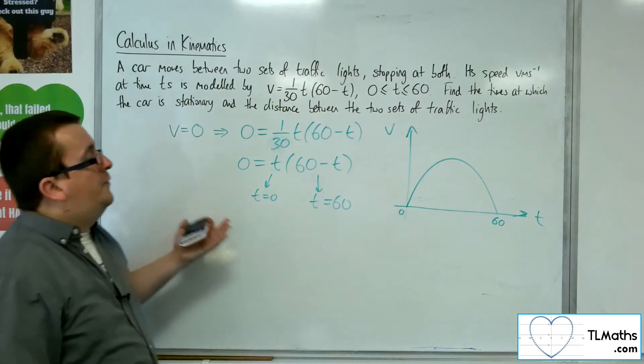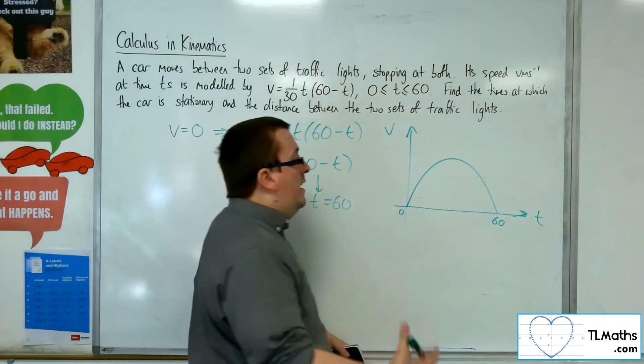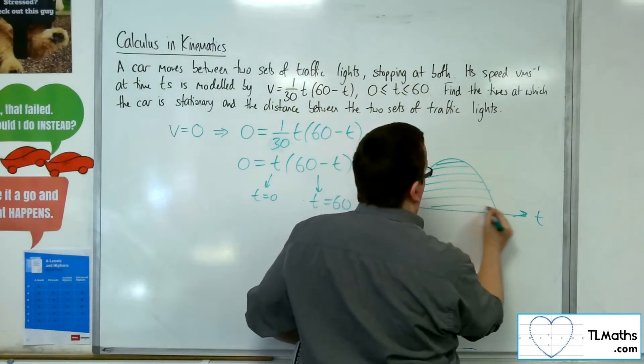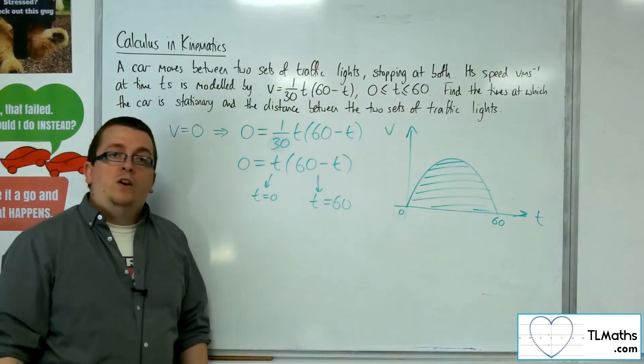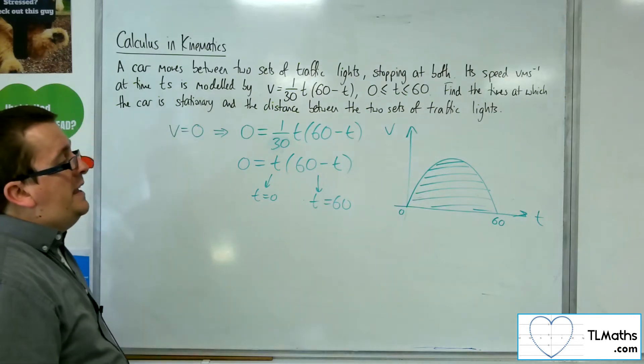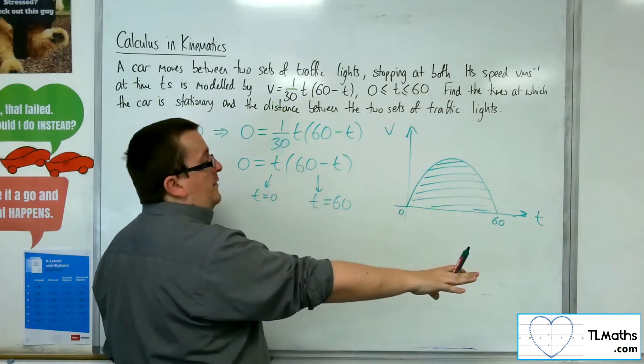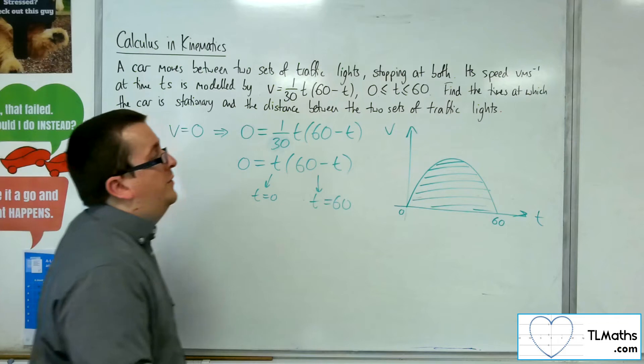And if I'm looking to find the distance between the two sets of traffic lights, then we know that the area between the curve and the x-axis, or the time axis in this case, will represent that displacement. So because the area is not going below the t-axis, when we look at velocity, this will be the same as the distance.